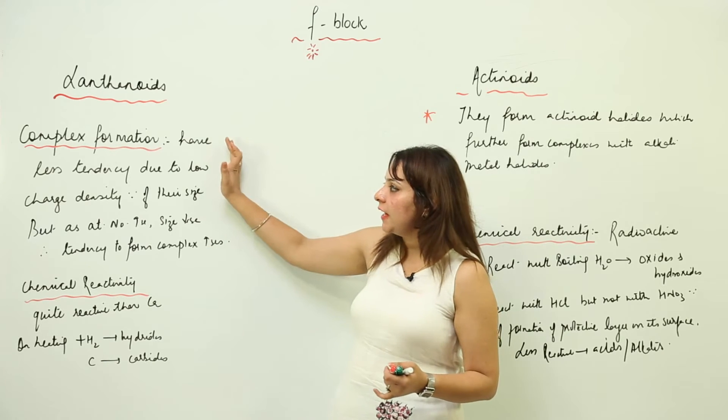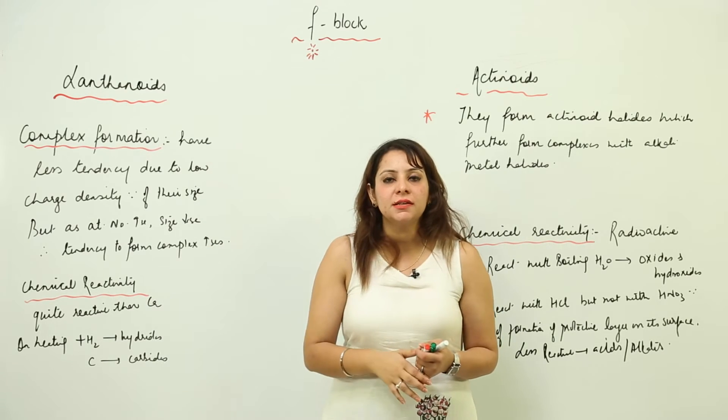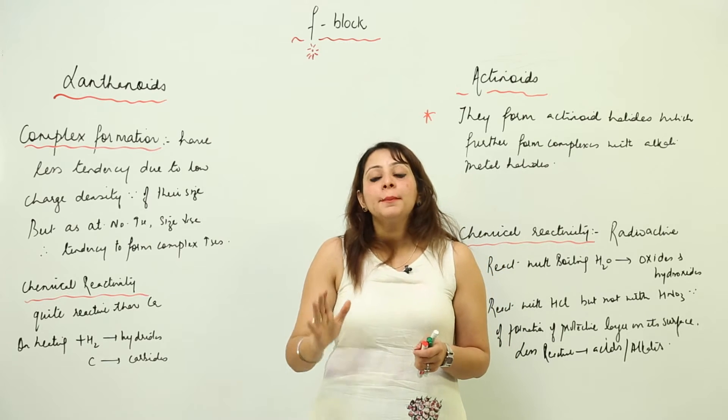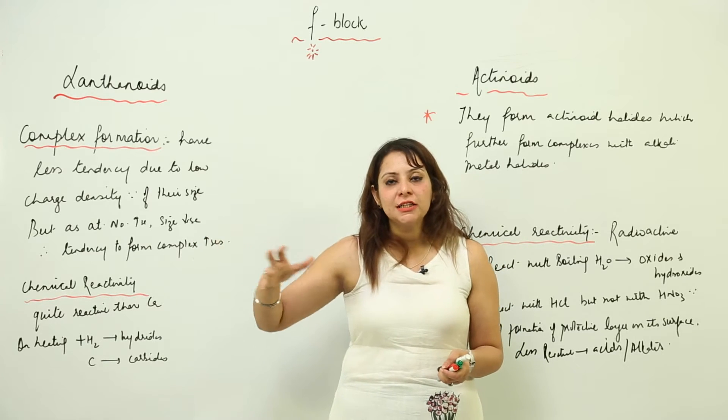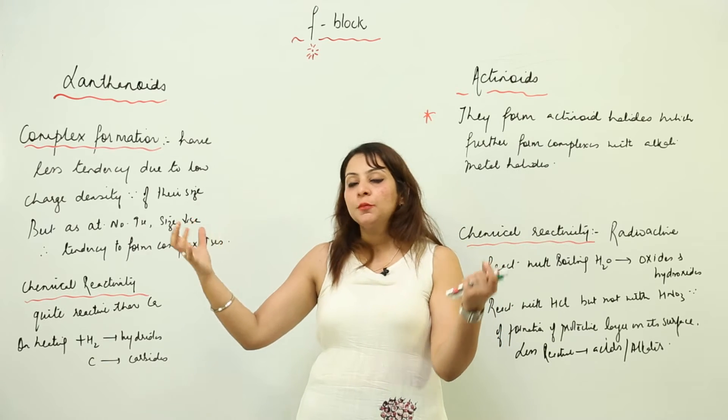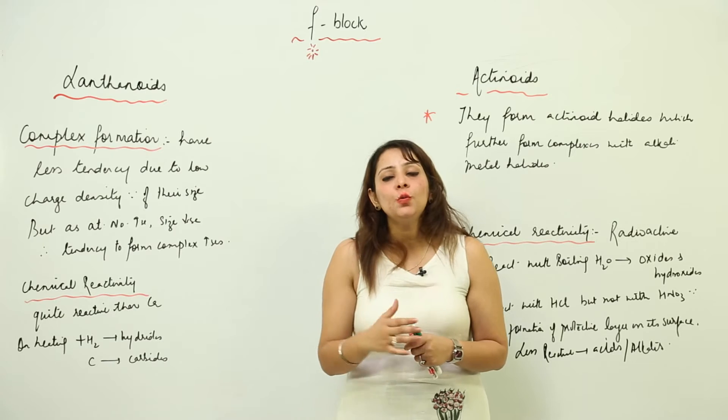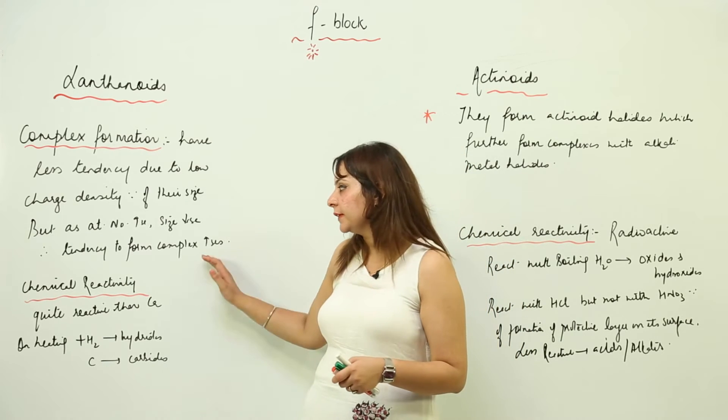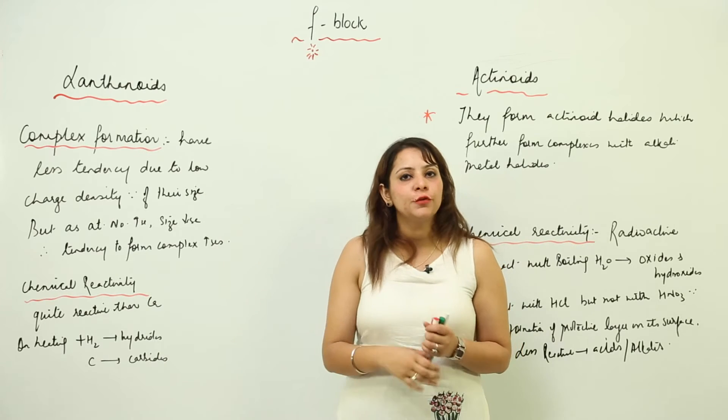When we see in this case, they have low charge density and they don't have such small size, so their tendency is low. But as we move in a period, there occurs lanthanide contraction due to which there is an abnormal decrease in size, which increases the tendency to form complexes when we move along the period.